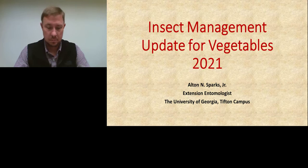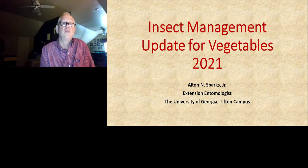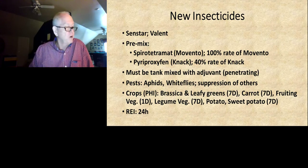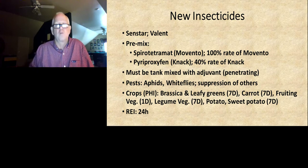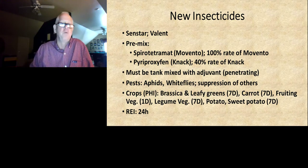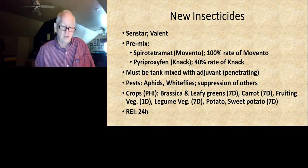Do we have any new active ingredients for insect management in vegetables? We do have one new product that's a pre-mix of two products we already use — that's Sinstar from Valent. It is a pre-mix of Spirotetramat, which is the active ingredient in Movento, and Pyriproxyfen, which is the active ingredient in Nylar. If you put out a full rate of Sinstar, you're putting out a full rate of Movento and a 40% rate of Nylar — so it's not a full rate of both products in this pre-mix.